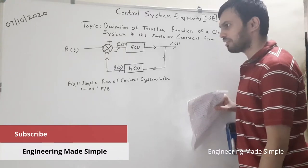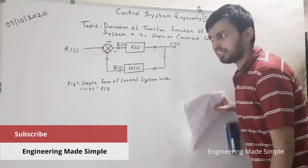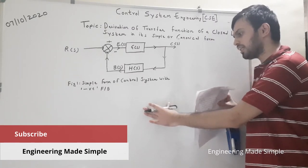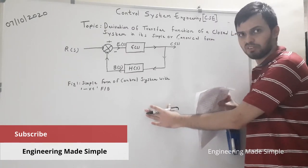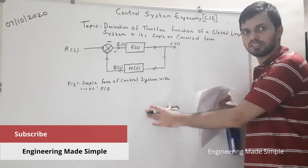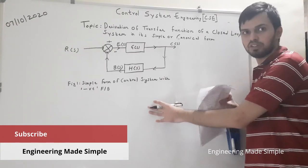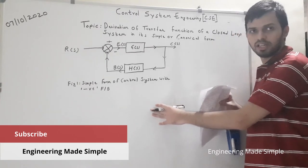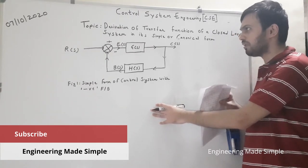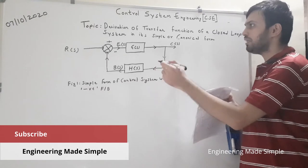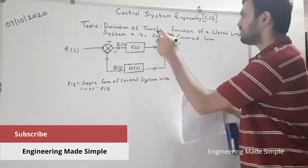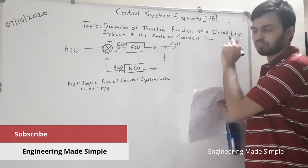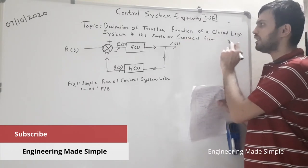Welcome to my channel Engineering Very Simple. In the last class we studied the concept of transfer function and block diagram representation of a closed loop control system. Now we will do a simple derivation titled: derivation of transfer function of a closed loop system in its simple or canonical form.